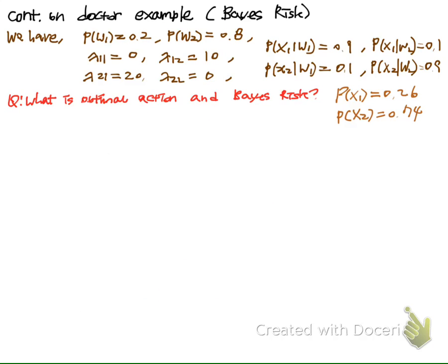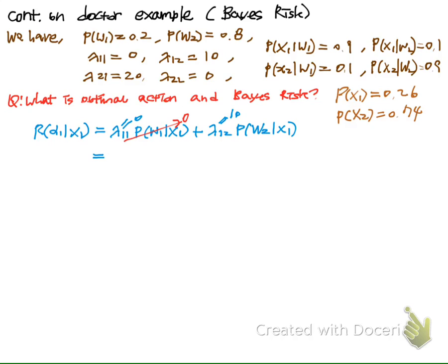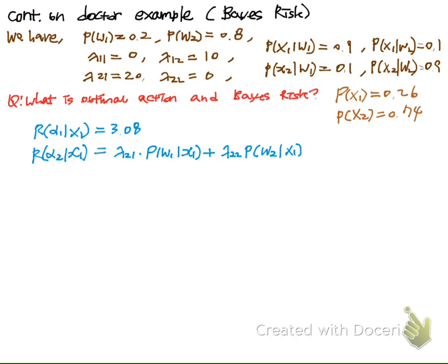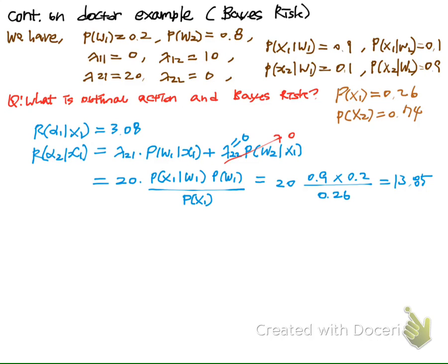Now we have all this information in addition to what we had before. We will compute the conditional risk using all of this. Because the cost for correct classification cases is zero, those terms are removed, and we compute only the misclassification cases using Bayes' rule. Since we have p(x1), the conditional risk of choosing action 1 for blood test result x1 will be 3. Similarly for action 2, doing the same computation gives a conditional risk of 13.85.